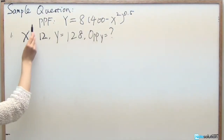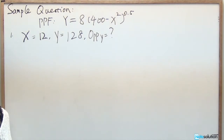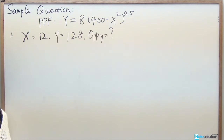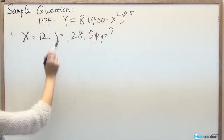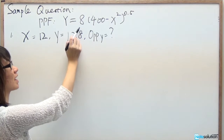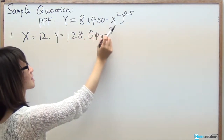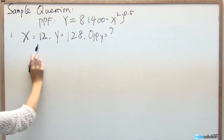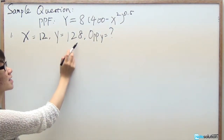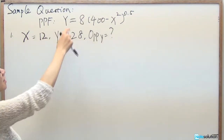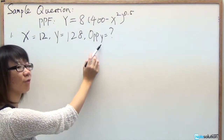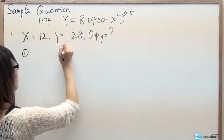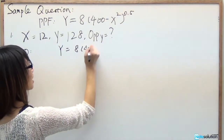A sample question from the Fall 2011 Term Test 1 gives the PPF function Y equals 8 times (400 minus X²) to the power of 0.5. The first sub-question states X equals 12, Y equals 128, and the point is on the PPF line. It asks for the opportunity cost of Y.